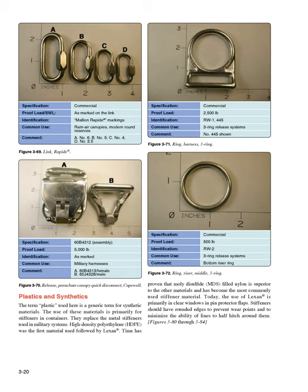Plastics and Synthetics: The term plastic used here is a generic term for synthetic materials, used primarily for stiffeners in containers, replacing the metal stiffeners used in military systems. High-density polyethylene (HDPE) was the first material used, followed by Lexan. Time has proven that molybdenum disulfide (MDS) filled nylon is superior to the other materials and has become the most commonly used stiffener material. Today, the use of Lexan is primarily in clear windows and pin protector flaps. Stiffeners should have rounded edges to prevent wear points and to minimize the ability of lines to half-hitch around them.